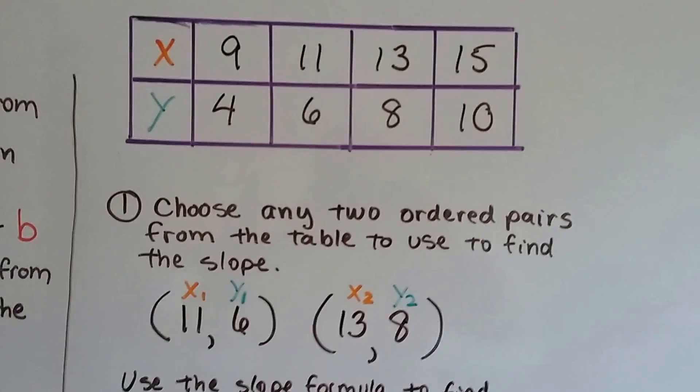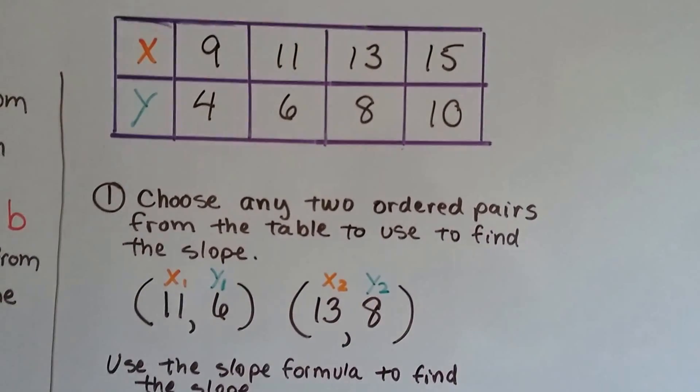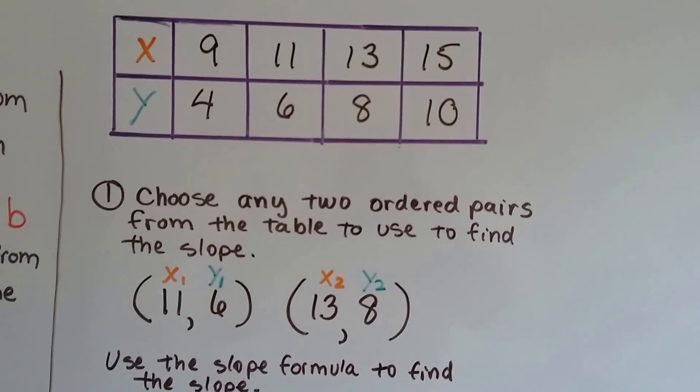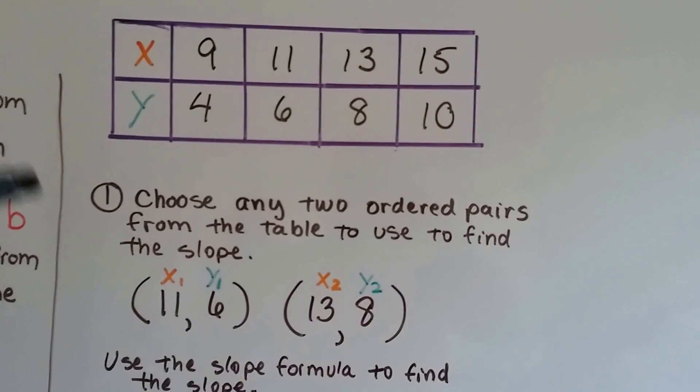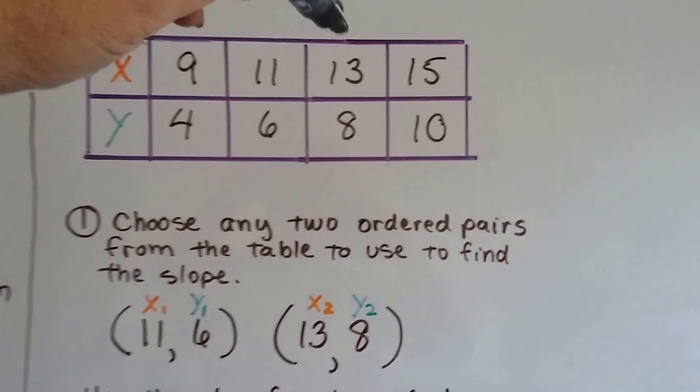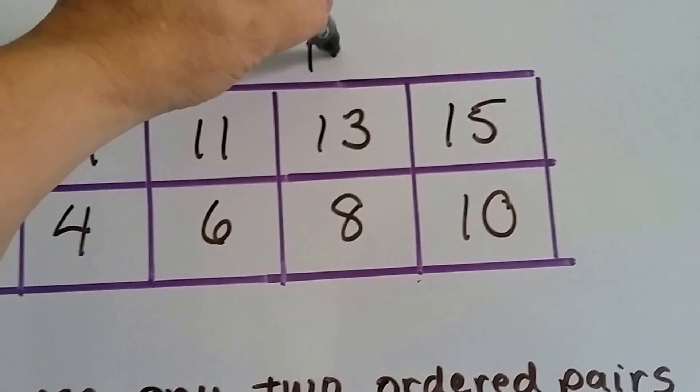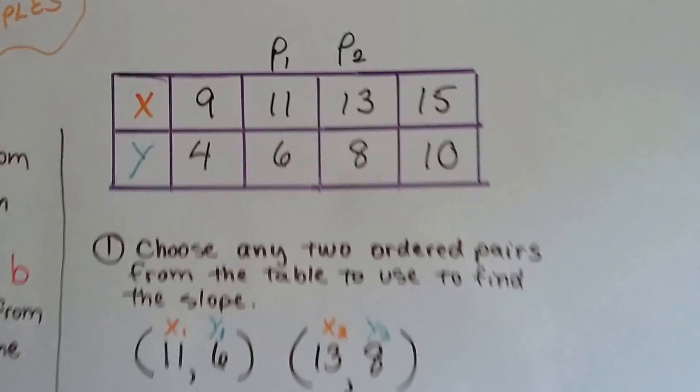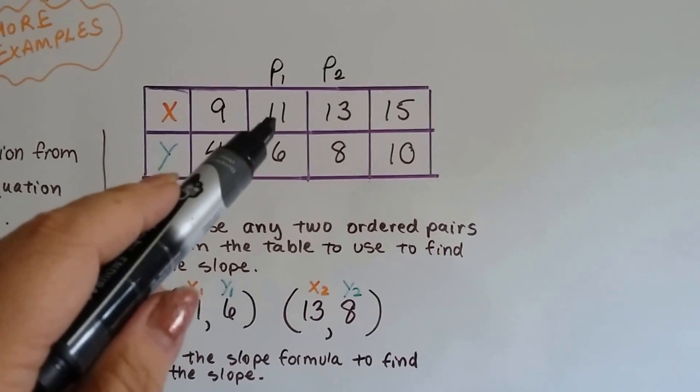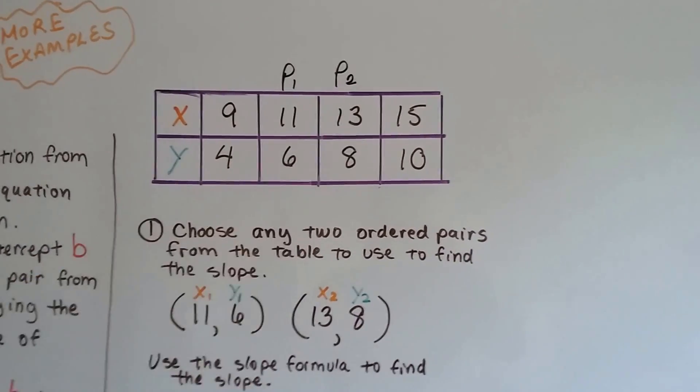Here's our table of values. You can see our x and our y. And we choose any two ordered pairs from the table to use to find the slope. So I chose this one and this one. So this is going to be like point 1 and this will be point 2. So that will be our x1, y1, and x2, y2.